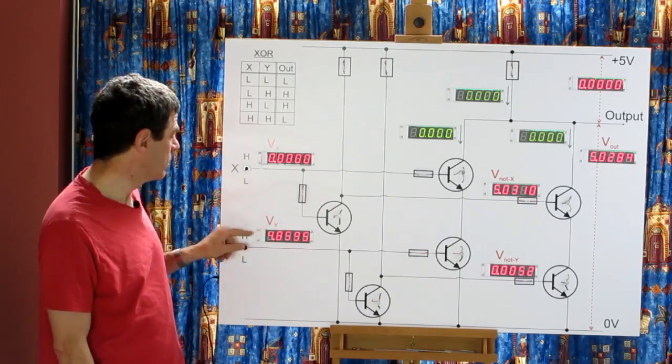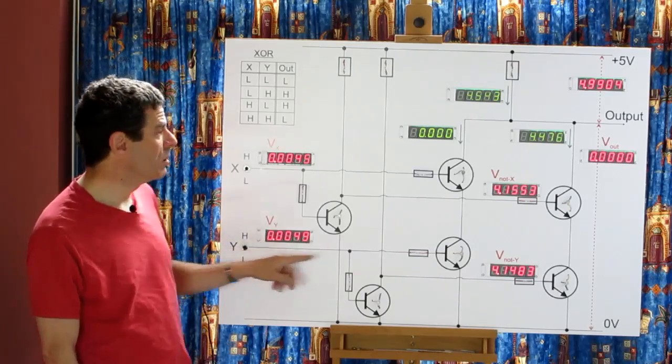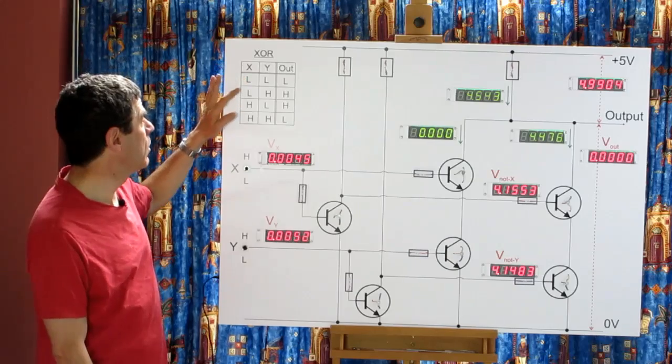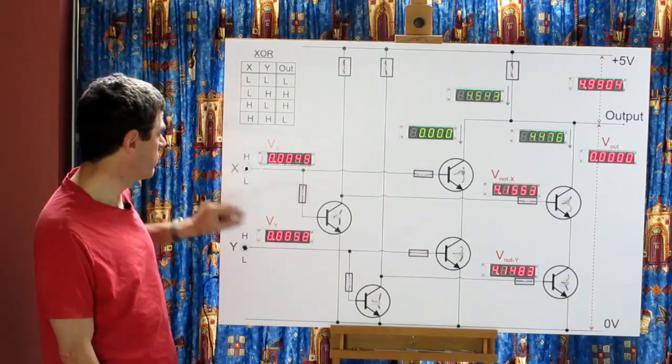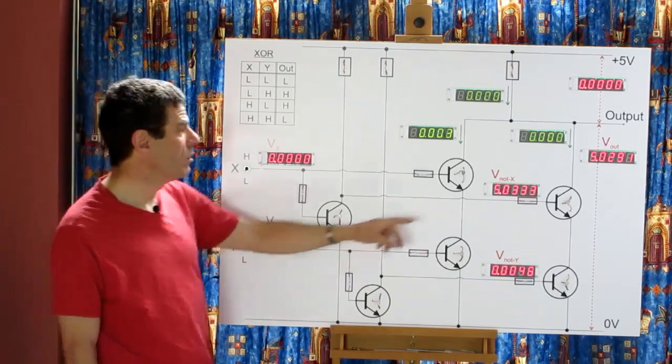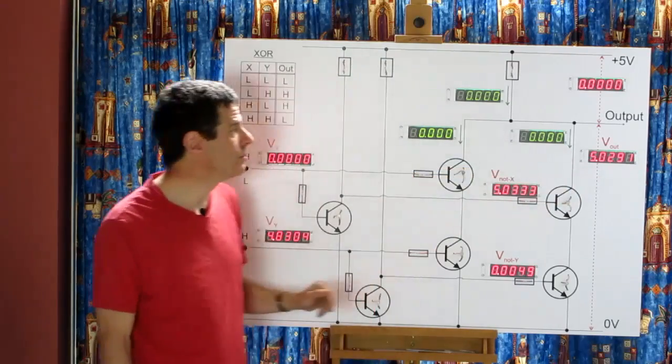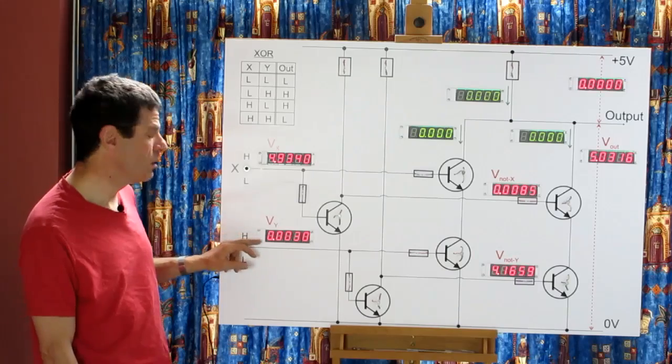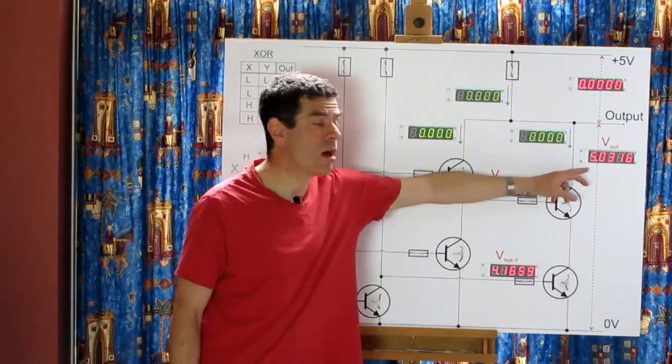When X is low, Y is low, our output is low, which is this one here. When X is low and Y is high, we have a high output. When X is high, Y is high, we have a low output.